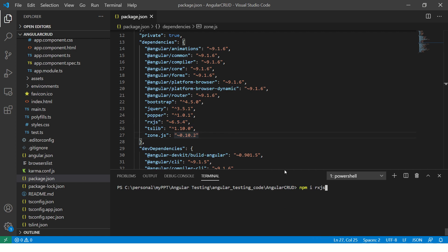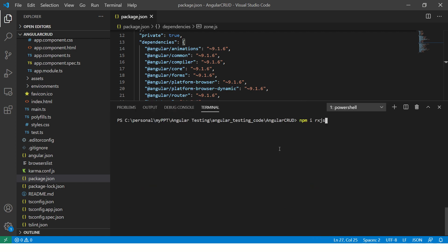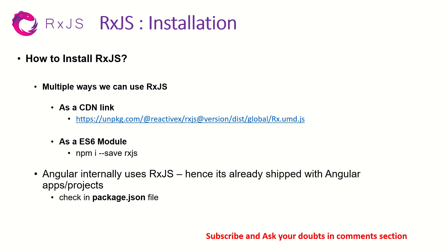But like I said, if you want to use RxJS in a project which is not Angular — or it's just pure vanilla JavaScript — you can still go ahead, do npm install, and you can still use it. There is no restriction, no concept that it can be used only with Angular. This is also a common interview question where people ask: can we use RxJS outside of Angular? The answer is yes — either as a CDN link, or as an npm module by installing npm install RxJS.